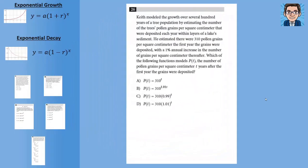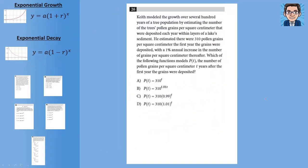So let's take a look at this first equation. Keith modeled the growth over several hundred years of tree population by estimating the number of trees, pollen grains per square centimeter that were deposited each year within layers of lake sediment. He estimated that there were 310 pollen grains, so that's our starting point. One percent annual increase. That tells us right there that it's exponential growth. It's happening each year and by one percent.